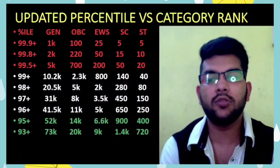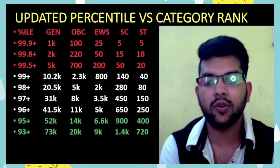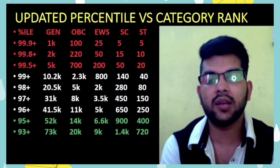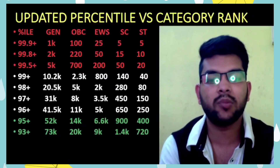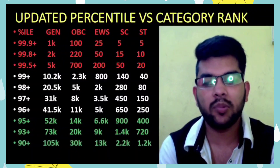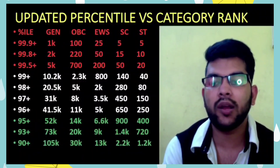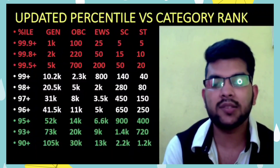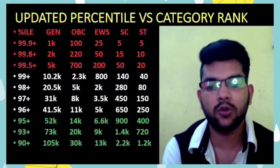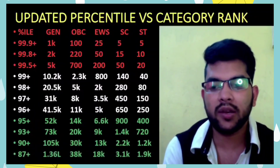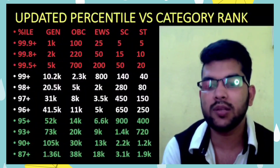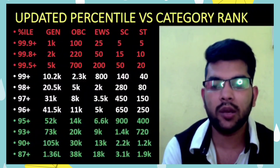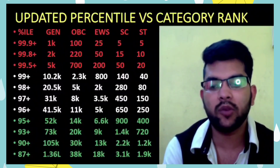For 93+ percentile, General rank under 73,000, OBC under 20,000, EWS under 9000, SC under 1,400, ST under 720. For 90+ percentile, General rank under 1,05,000, OBC under 30,000, EWS under 13,000. For 87+ percentile, General rank under 1,36,000, OBC under 38,000, EWS under 13,000, SC under 3,100, ST under 1,900.